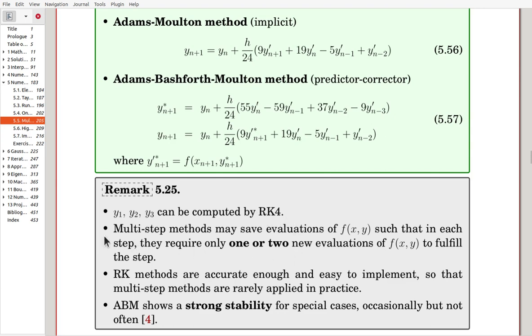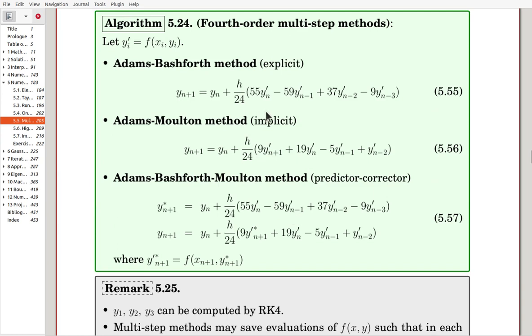After that, we can use this ABM. Multi-step methods may save evaluation of the slope such that in each step, they require only one or two new evaluations of the slope to finish the step. After getting Y_n, to get Y_n+1, we need this evaluation: f at X_n, Y_n. So one evaluation is required, and the earlier values can be saved.